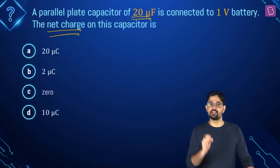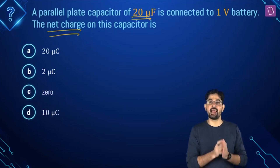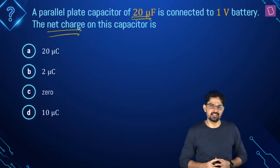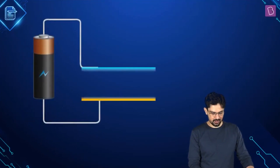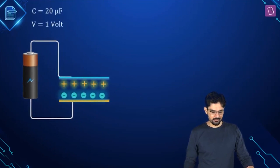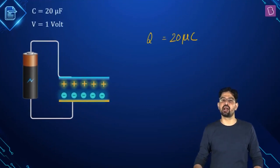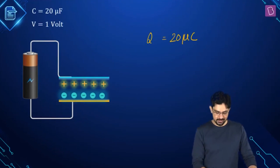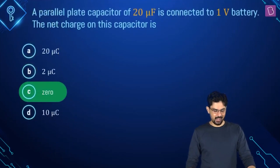But here, 'net charge' implies the summation of the charge on the positive plate and the negative plate. The charge on the positive plate is +20 microcoulomb and on the negative plate is −20 microcoulomb, which gives us the net charge as zero. So in this case, option C is the right answer.